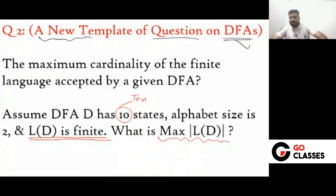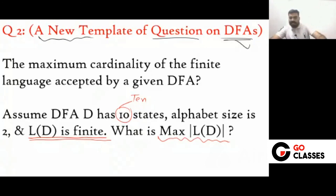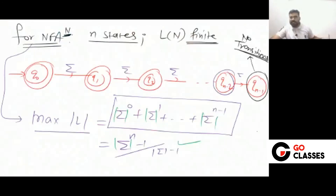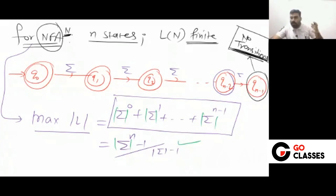The GP summation formula is: first term multiplied by (common ratio^number of terms - 1) divided by (common ratio - 1). In NFA, the last state has no transition — we are not creating any transitions from it, so the language remains finite. For DFA we cannot do that, but for NFA we can. So the language is still finite in the NFA case.